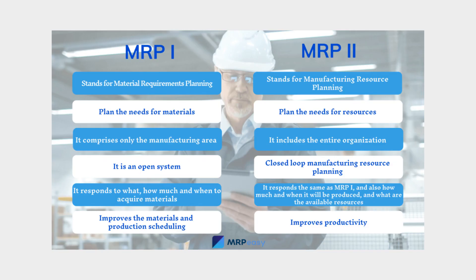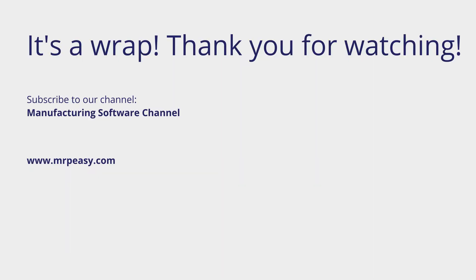In summary, MRP-1, or Material Requirements Planning, is a material management system. It calculates when purchasing orders must be made to suppliers and the work orders released, providing the amount of material needed according to the scheduled production. In contrast, MRP-2, or Manufacturing Resource Planning, is a manufacturing system. It not only deals with purchasing and production scheduling, but also with the capabilities of the factory in aspects such as labor or machinery.